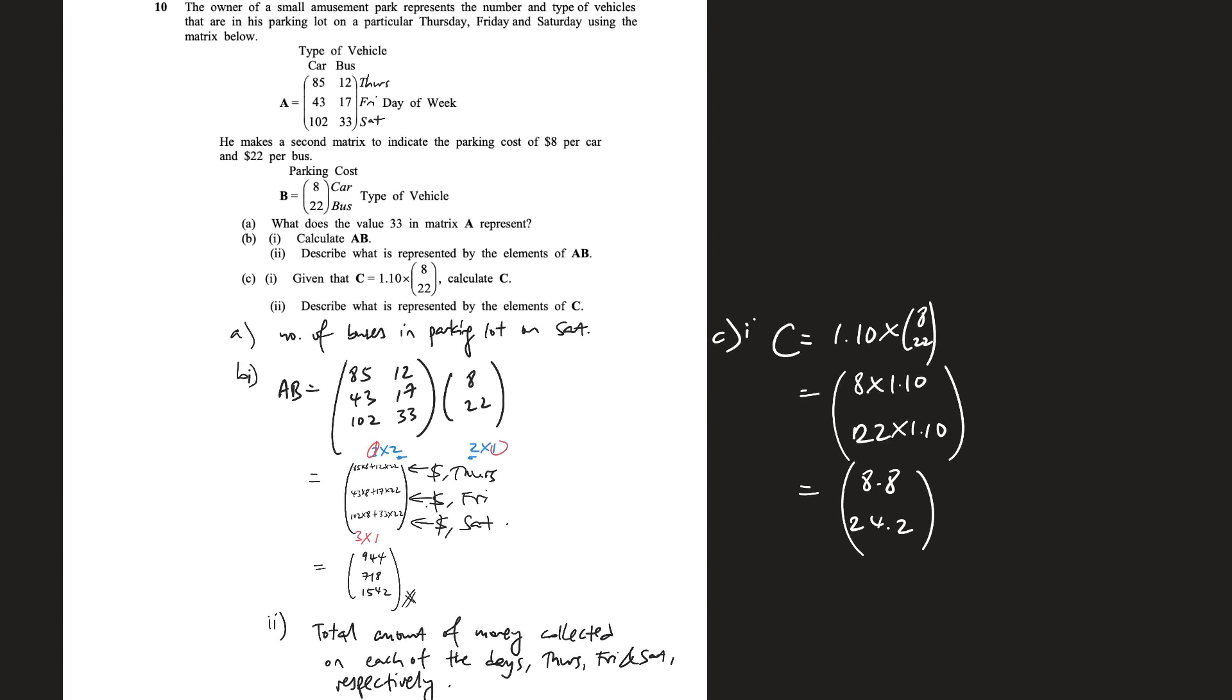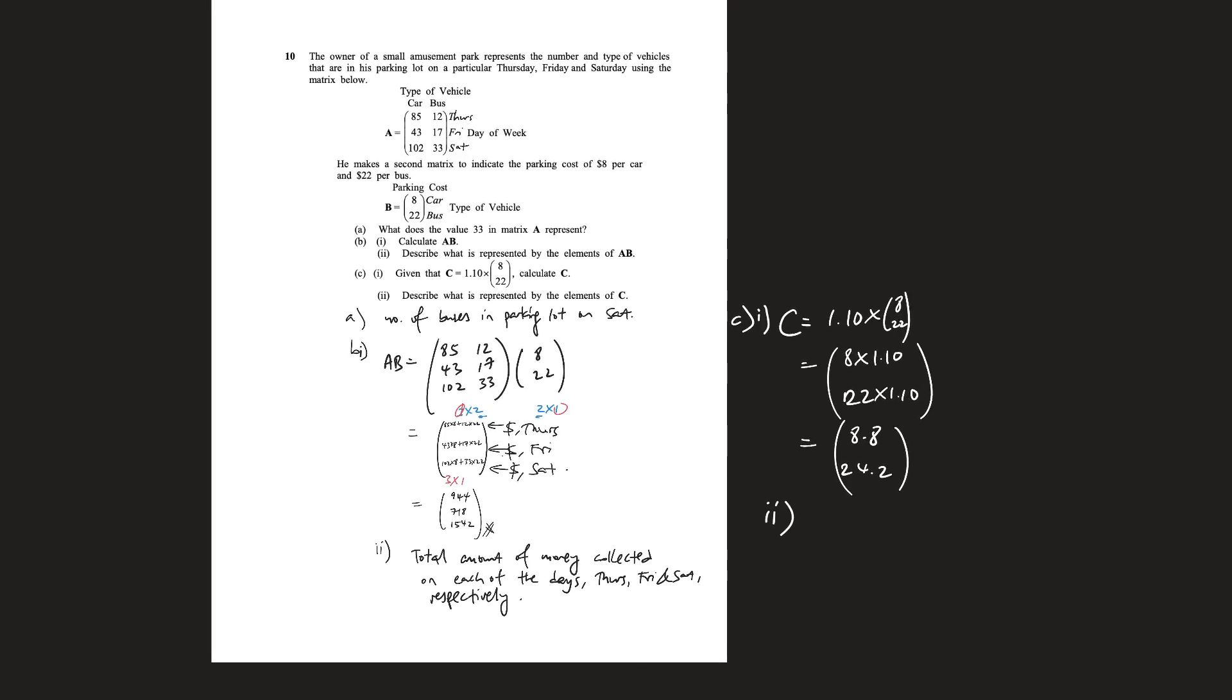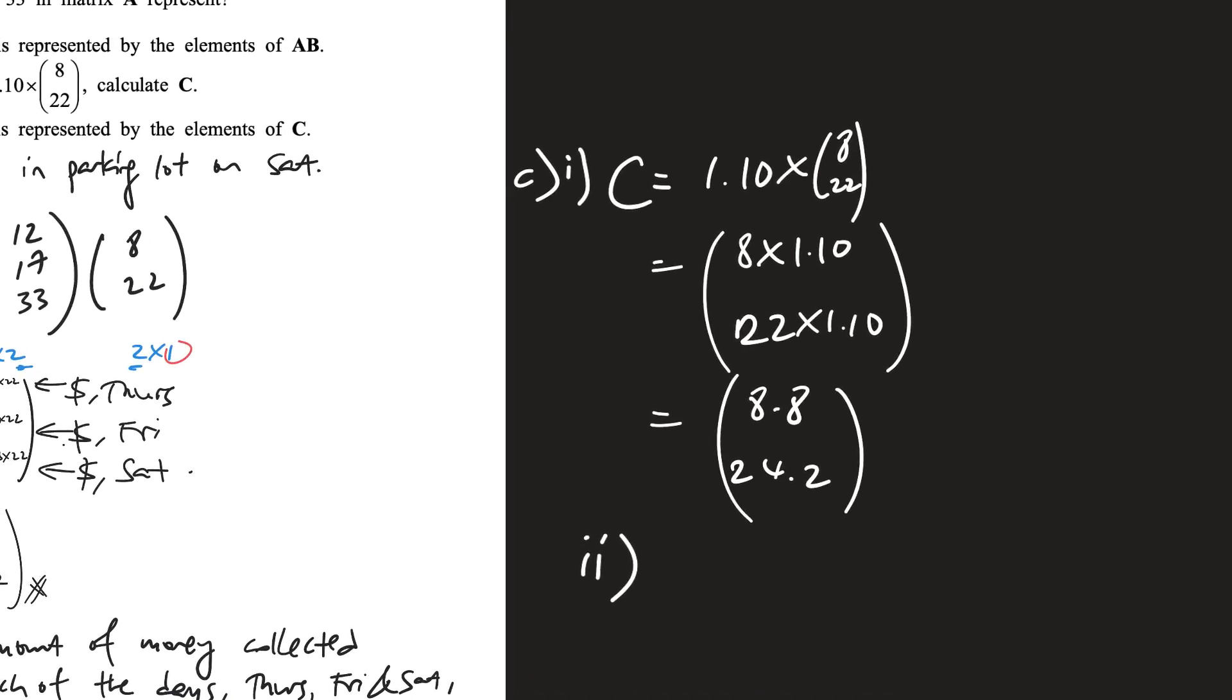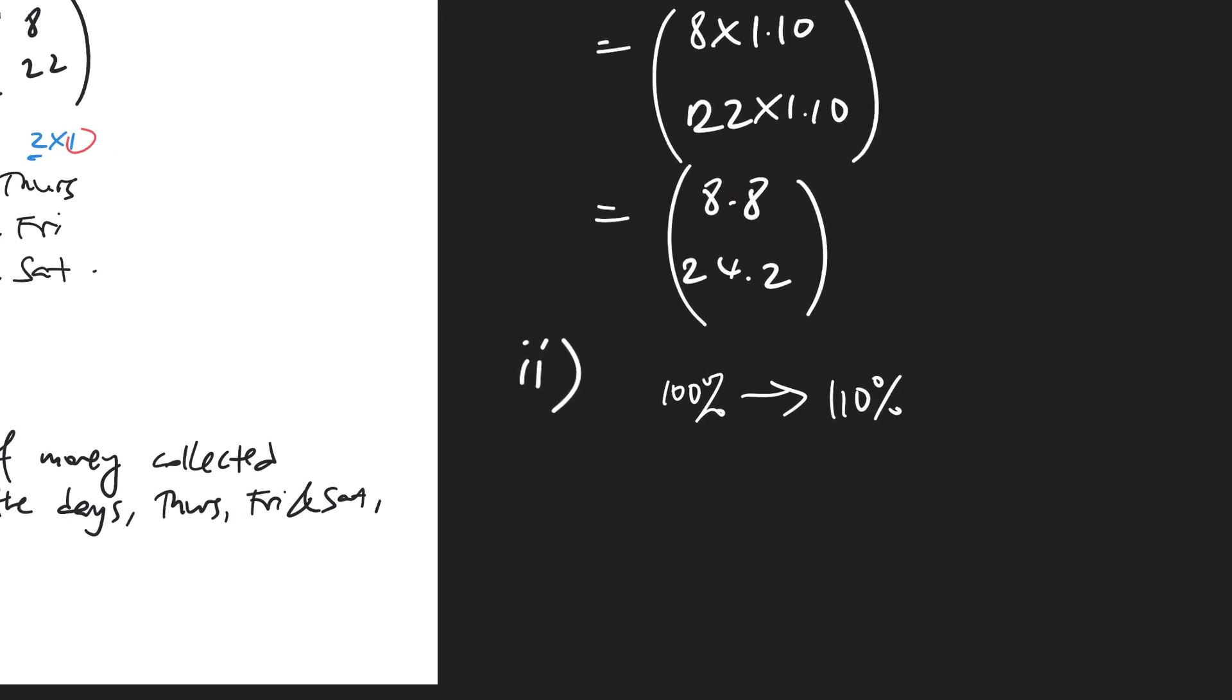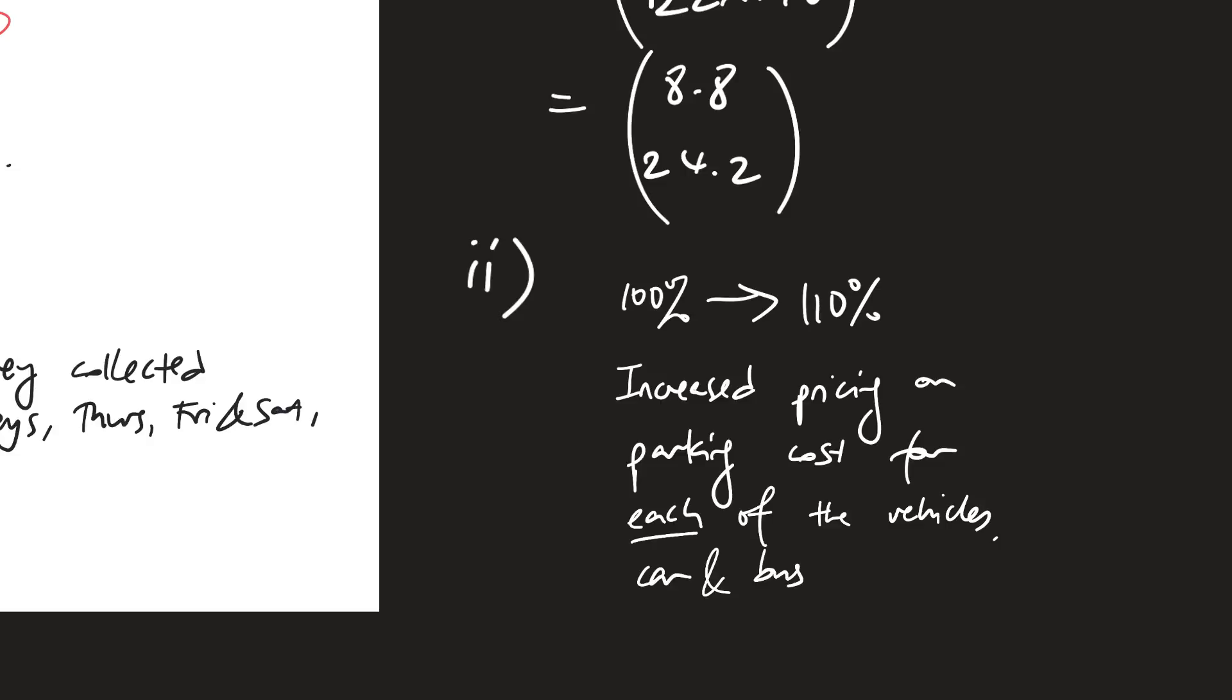And then part (ii). What is represented by the elements in C? Well, it doesn't really give me any context, but you can think of it, when you multiply by 1.1, basically you're making it from 100%, which is what it originally was, you're making 110%. So basically you're increasing the cost. So you can just say it stands for the increased pricing on parking cost for each of the vehicles, each of the vehicles, car and bus, respectively.